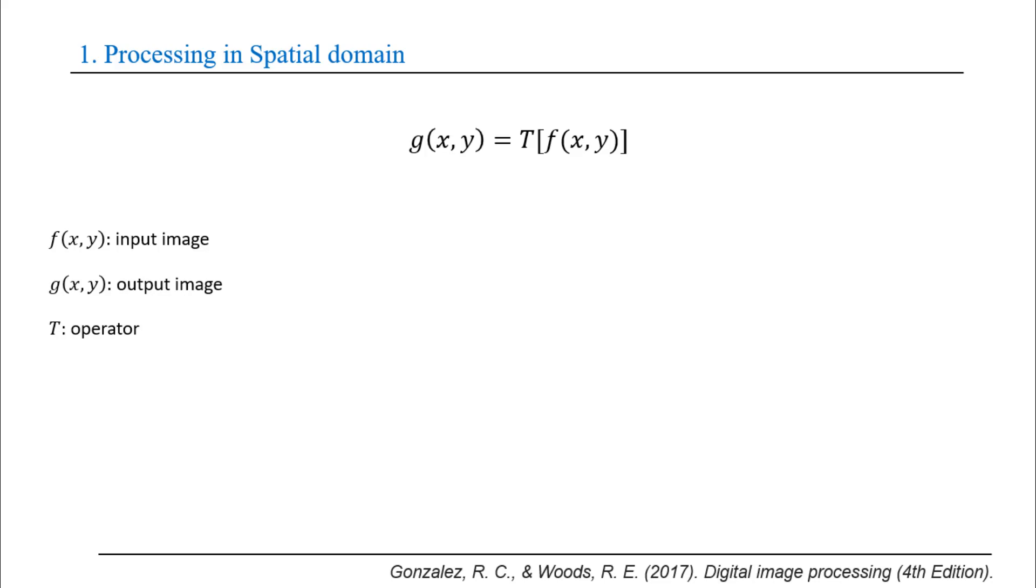In case of intensity transformation, where the operation is on a single pixel, the equation becomes s equals T(r), where s is the intensity of g(x,y) and r is the intensity of f(x,y). In this video we will talk about only intensity transformation.